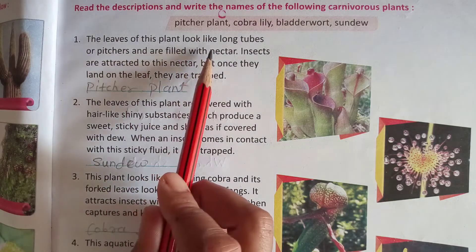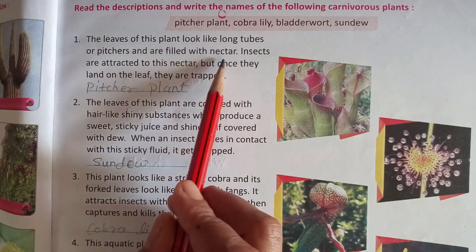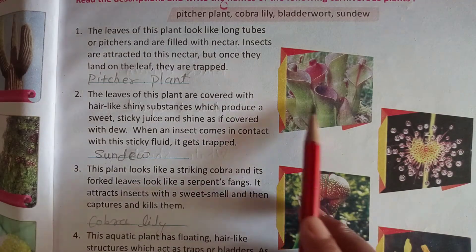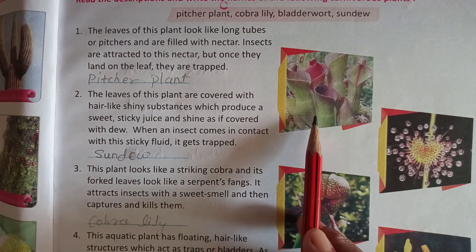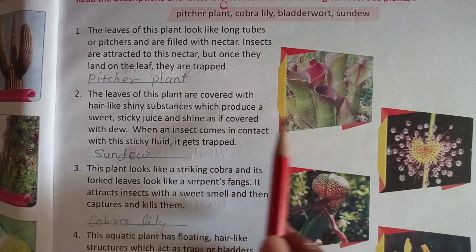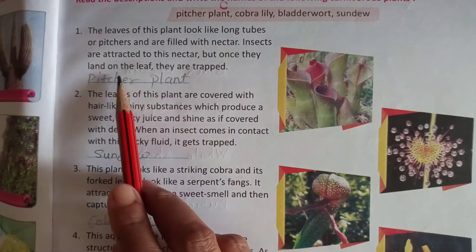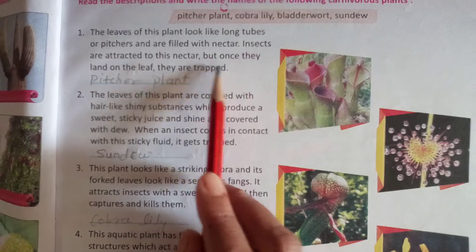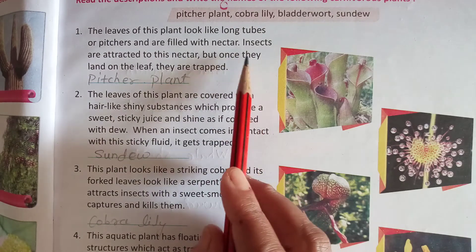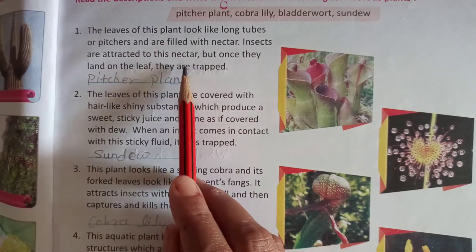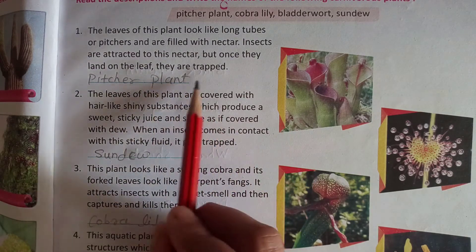The leaves of this plant look like a long tube or pitcher and are filled with nectar. Insects are attracted to this nectar, but once they land on the leaves, they are trapped in the leaves.